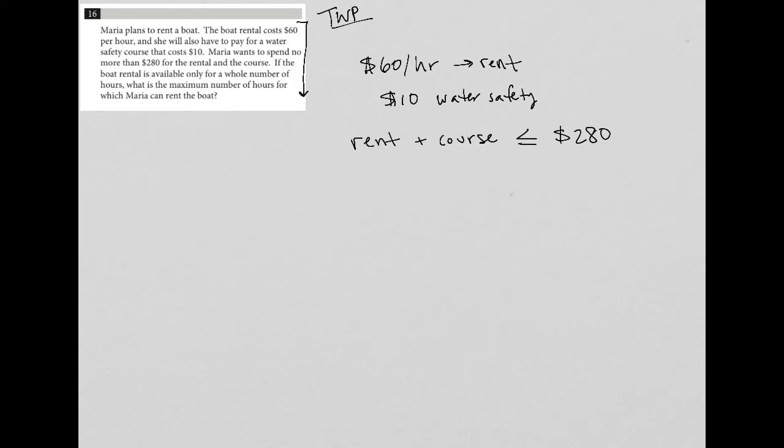So we know the course is $10. So plus 10 less than or equal to $280. The rent we know is 60, but then that's going to be multiplied by a certain number of hours that she uses the boat for. I'll just call that number of hours H for hours. So I can simplify this by subtracting 10 from both sides. And I'd end up with 60H is less than or equal to 270.